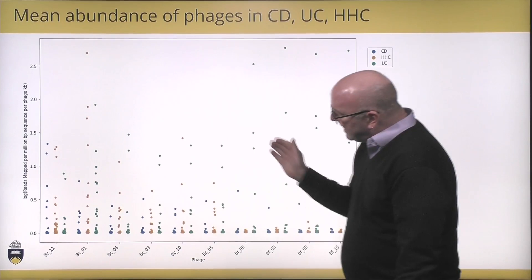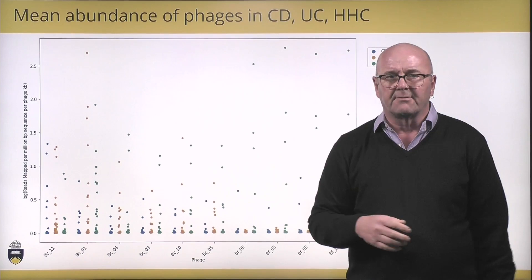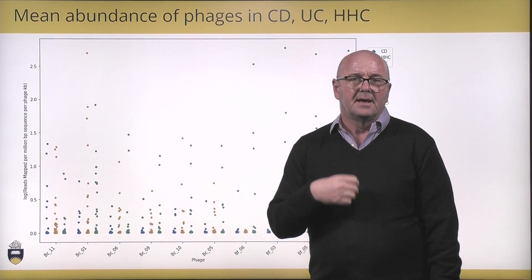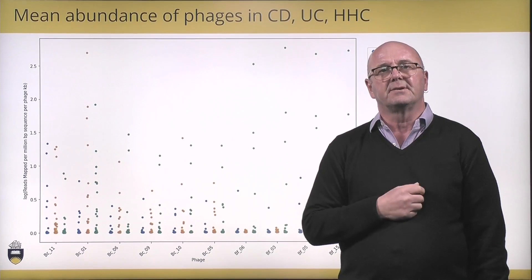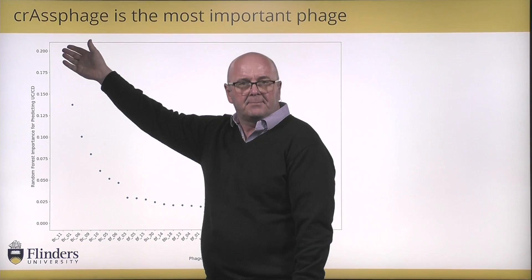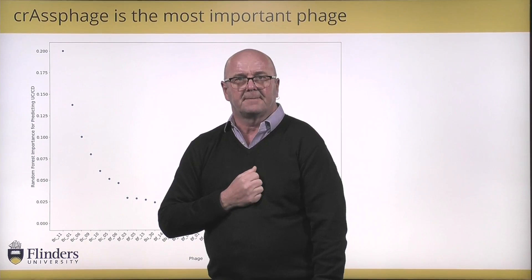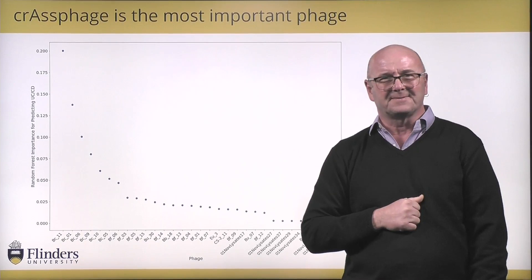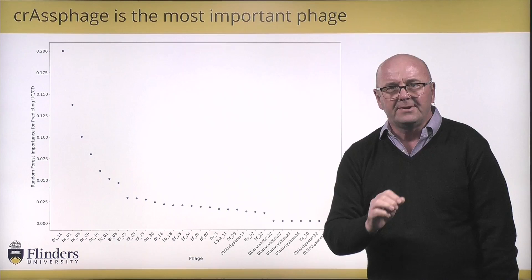We can take this information and put it into machine learning tools like a random forest, and ask how good these phages are at predicting whether you have disease or whether you're healthy. You may see something like this random forest variable importance plot showing that a particular phage is really important at predicting disease versus health. In this case it turns out the most important phage is crass phage — we don't know why that is at the moment, it's something we're still trying to figure out.